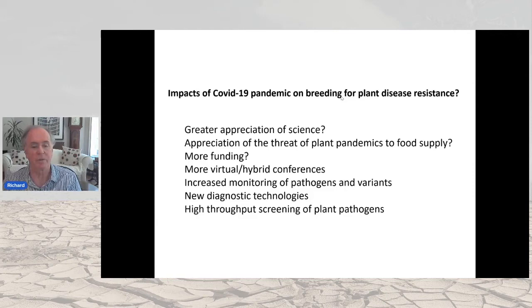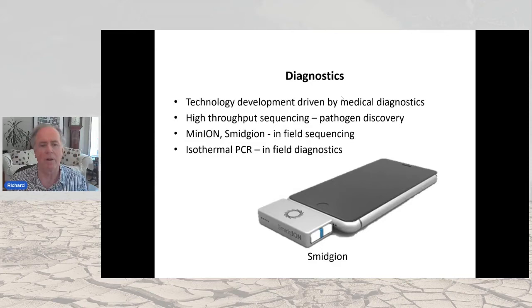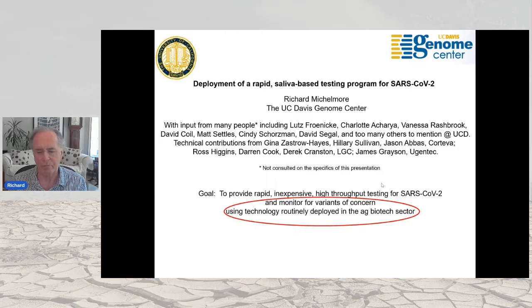We need increased monitoring of pathogens and their variants. There's going to be a dramatic increase in diagnostic technologies — COVID funding has driven much cheaper, faster, and very novel technologies. We're going to see high-throughput screening of plant pathogens. Even before COVID, technology development was driven by medical diagnostics — examples include the Smidgen from Oxford Nanopore and isothermal PCR for field diagnostics, where an iPhone with a small gadget can do real-time sequencing, put results into the cloud, and perform analysis in real time.